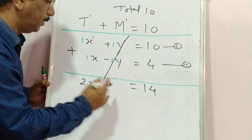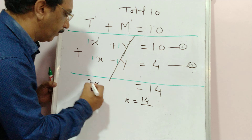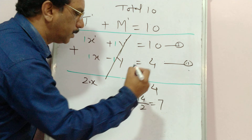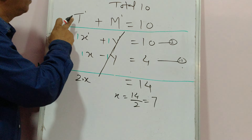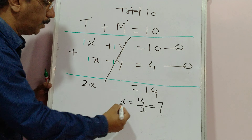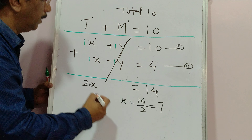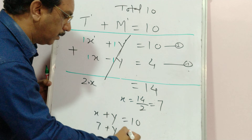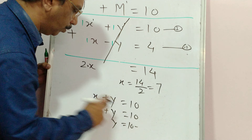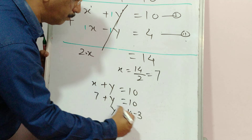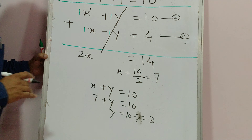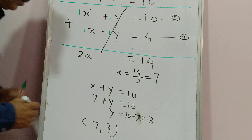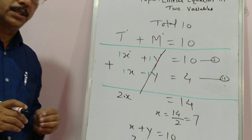Simply by adding the two equations, plus y and minus y cancel out. You get 1x plus 1x, so 2x is equal to 14. Therefore x is equal to 14 divided by 2, which is 7. The number of tomatoes is 7. Now substitute this value into equation one: x plus y equals 10. With x equal to 7, transferring to the right-hand side gives y equal to 10 minus 7, which is 3.